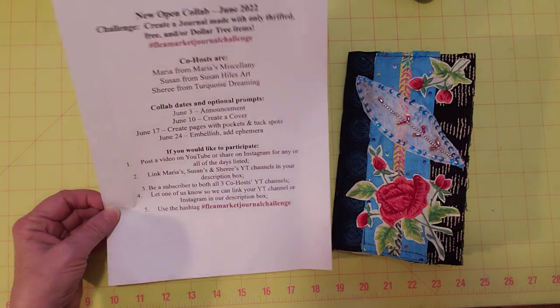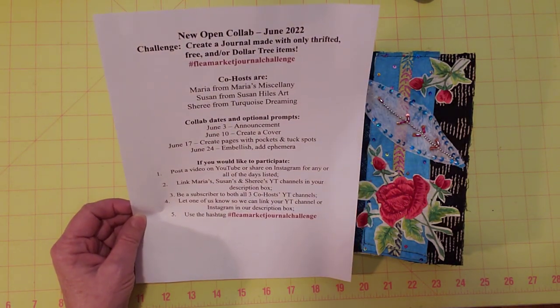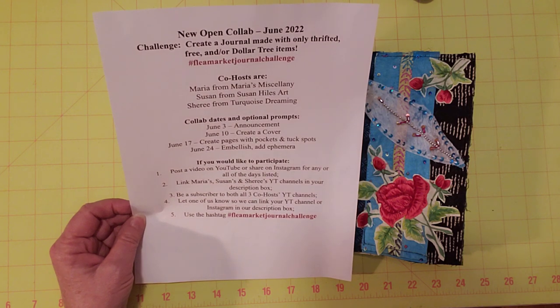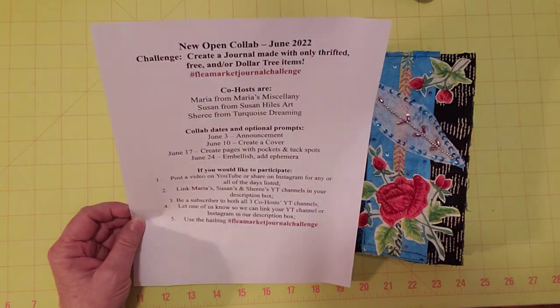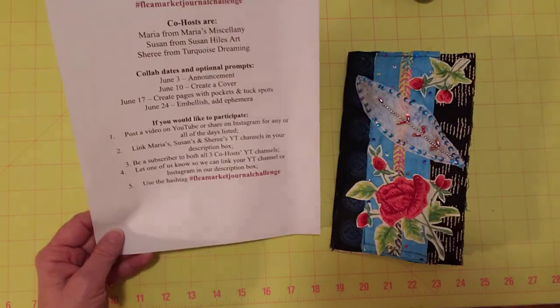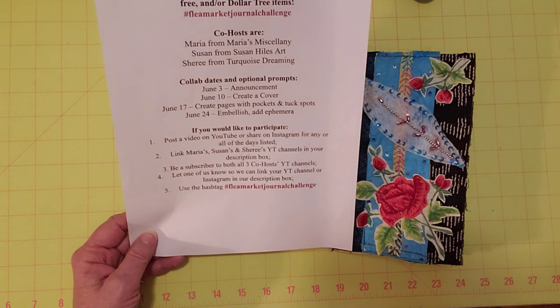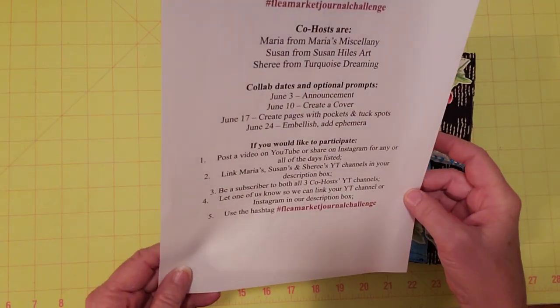So the object of this journal challenge is to just create a journal made with only thrifted, free, or Dollar Tree items. So I think that's pretty self-explanatory. I just want to get started on this week's prompt, which is create pages with pockets and tuck spots.